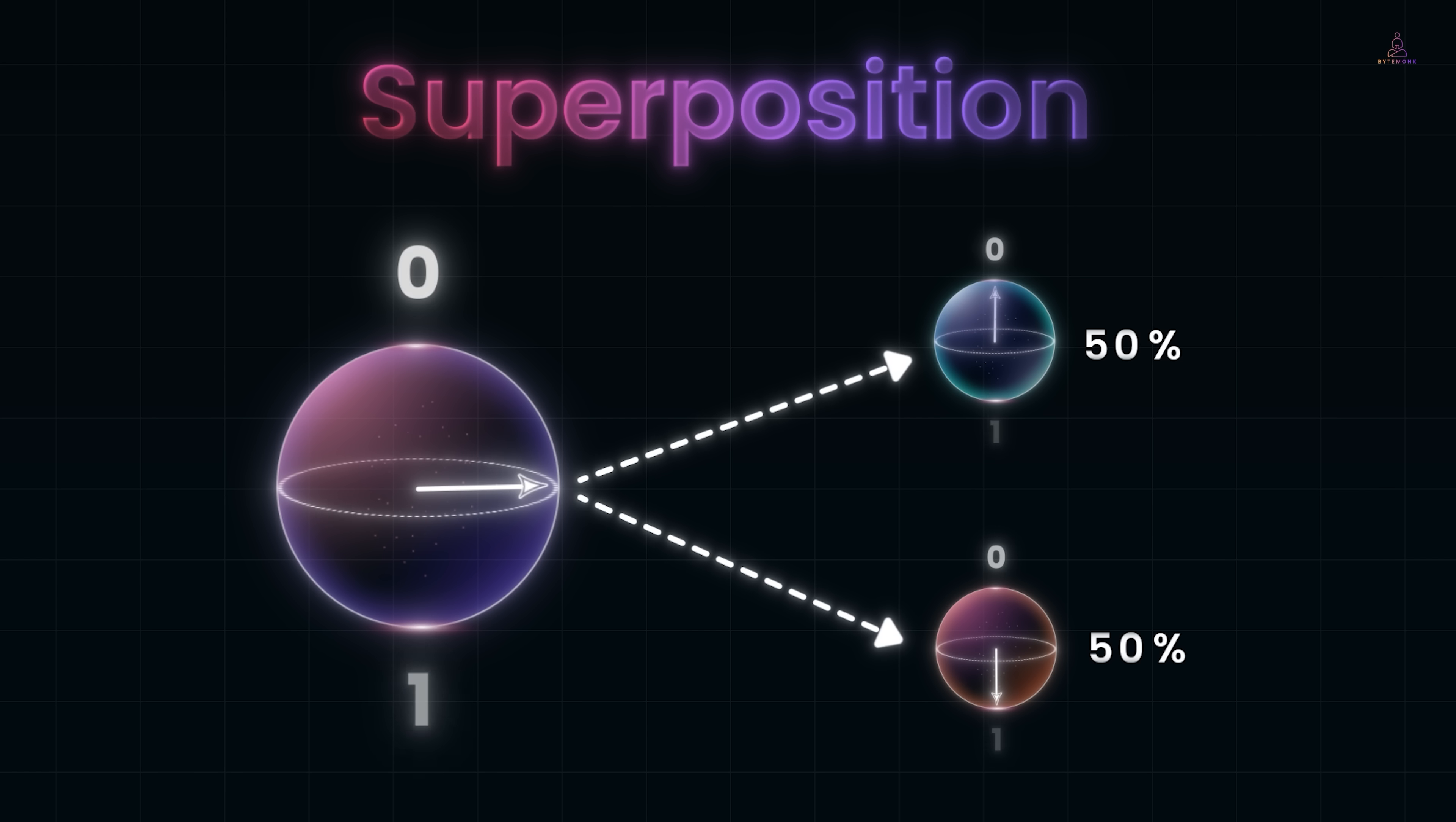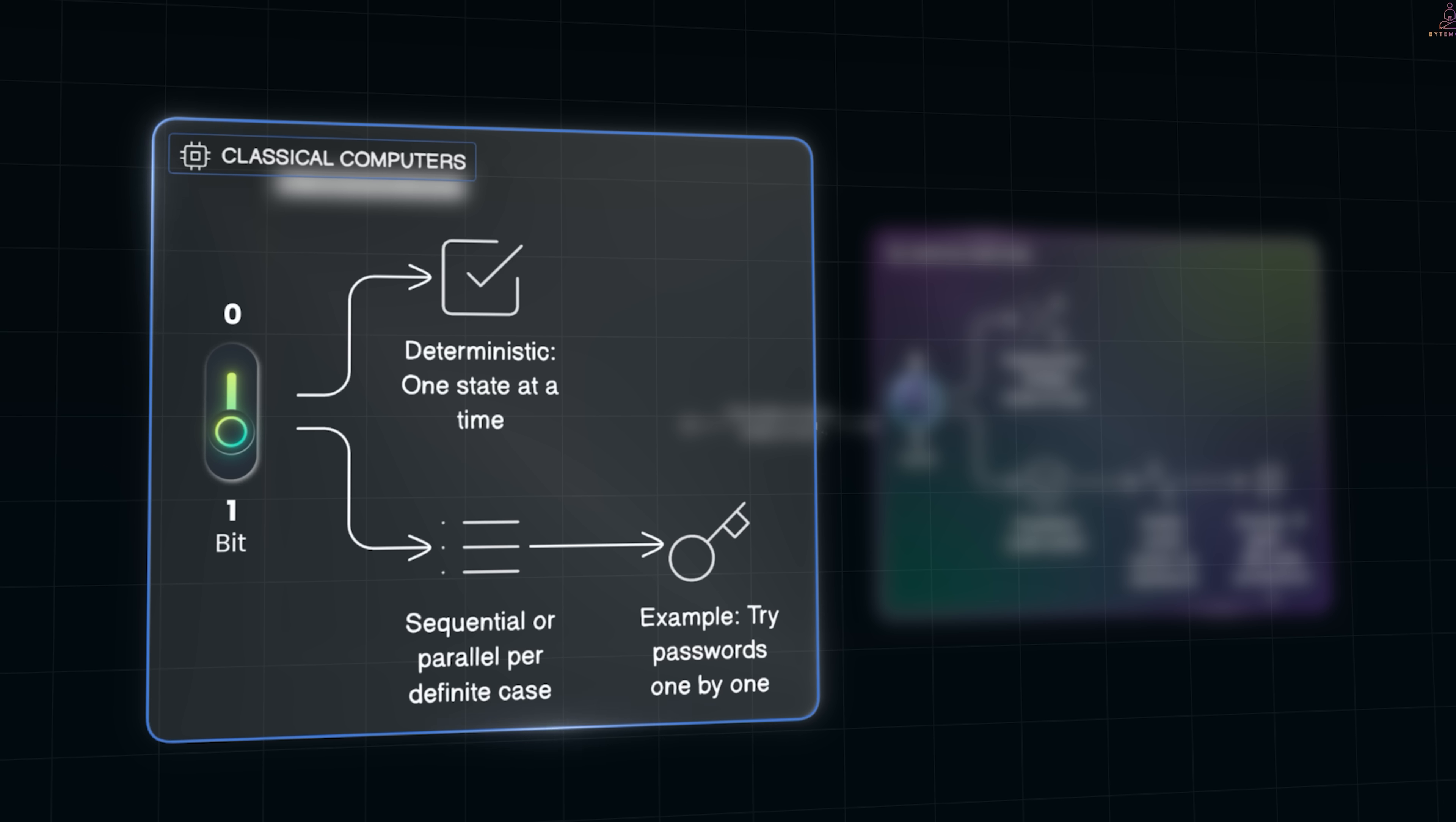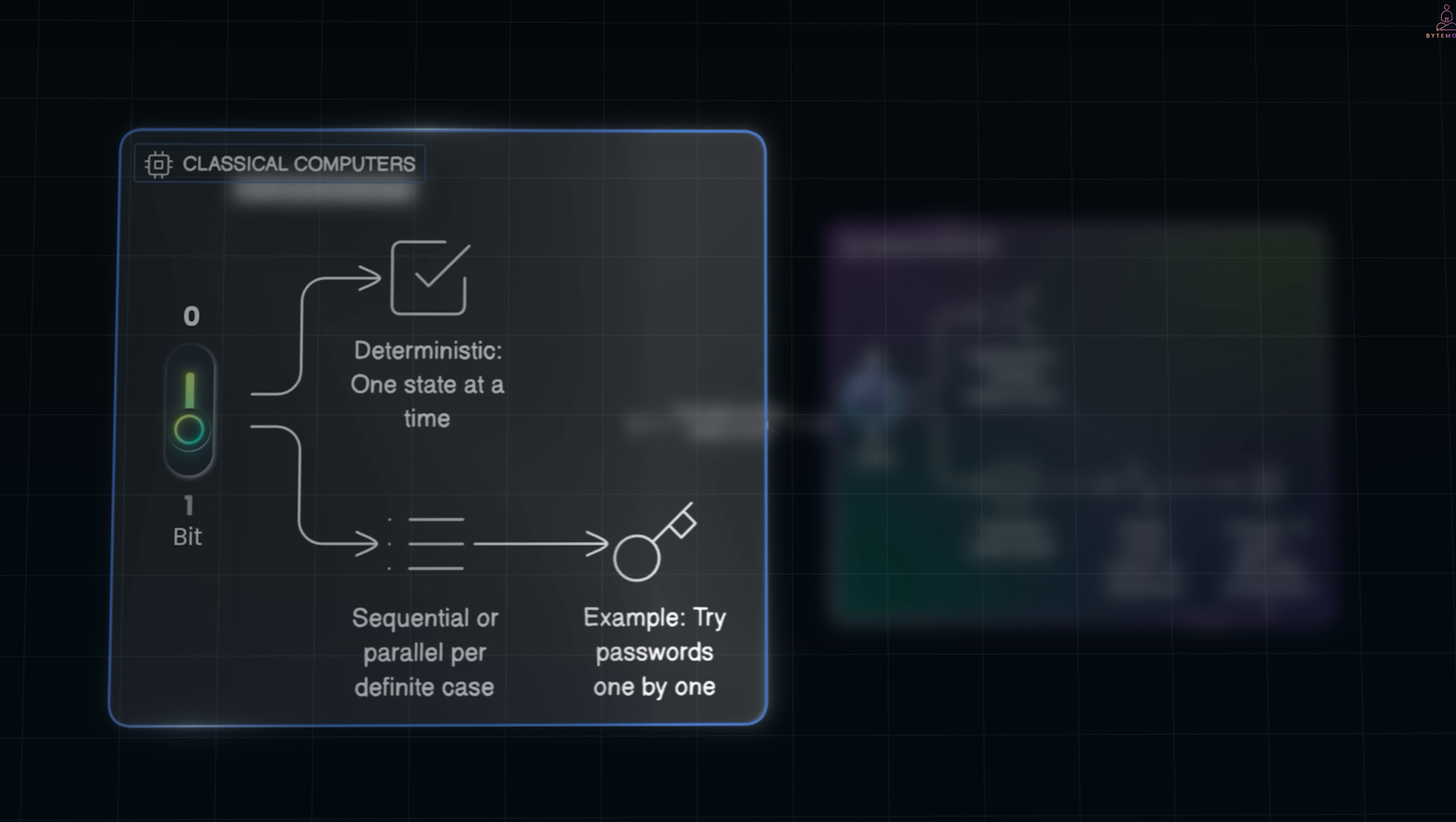Now imagine you want to test millions of coins with different starting positions. A normal computer would need to check them one by one, because a normal computer bit is binary - it's either 0 or 1, never both. If you want to solve a problem that requires checking lots of possibilities, say trying every password or searching a big database, you have to run through those options sequentially. So in essence, classical computation is deterministic, one input state at a time, producing one output at a time.